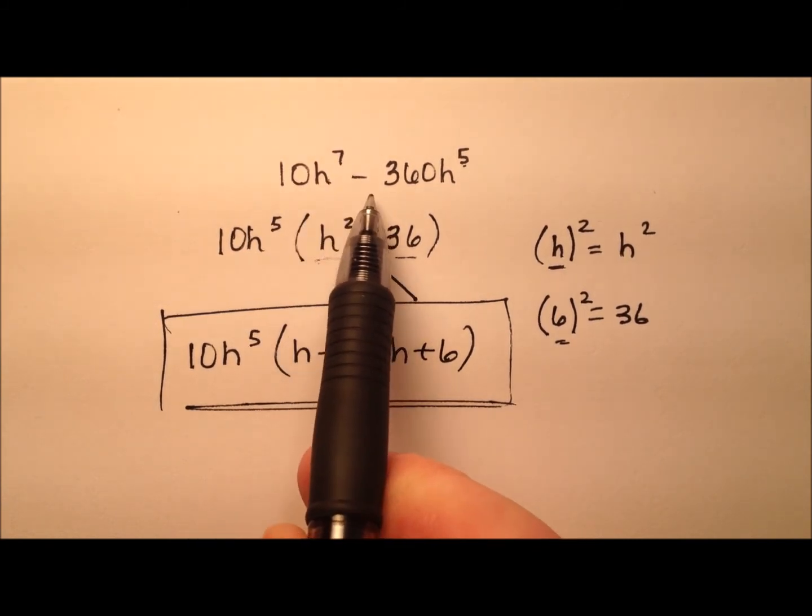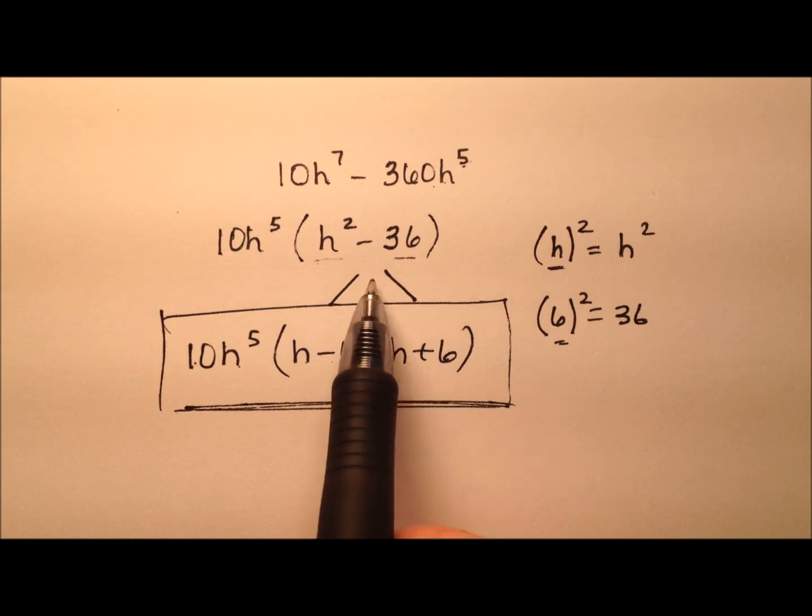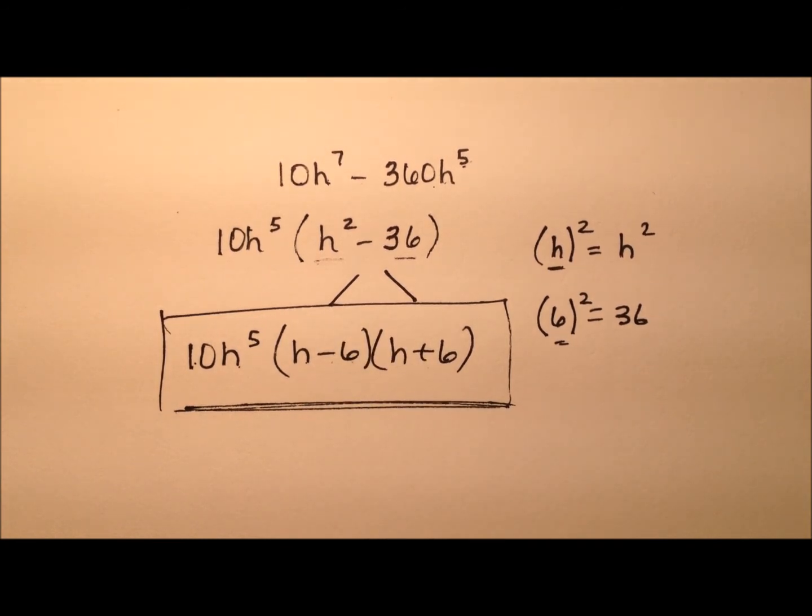So 10h^7 minus 360h^5 will factor to 10h^5 times the quantity h minus 6 times the quantity h plus 6 when we use this difference of squares factorization.